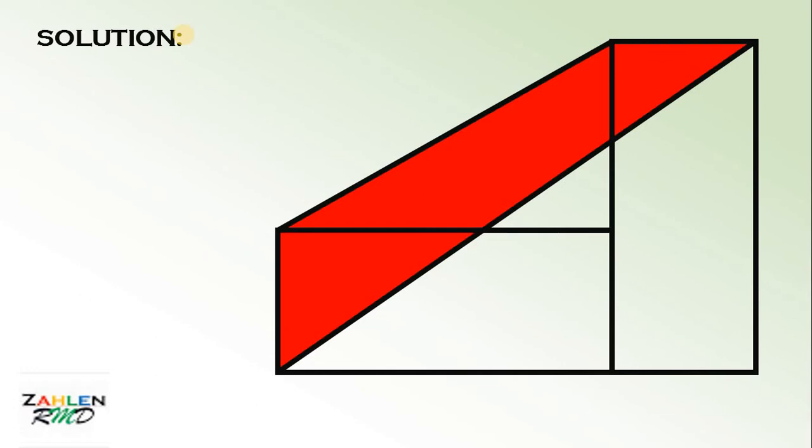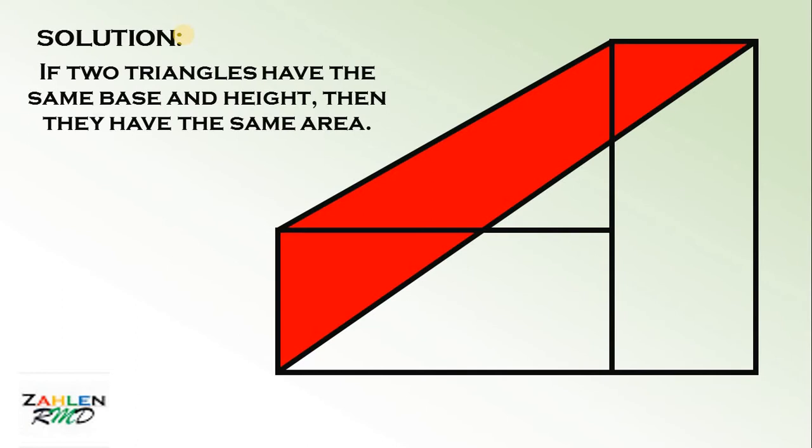We will use one main concept. If two triangles have the same base and the same height, then of course they have the same area. Keep in mind, if two triangles have the same base and the same height, they have the same area.